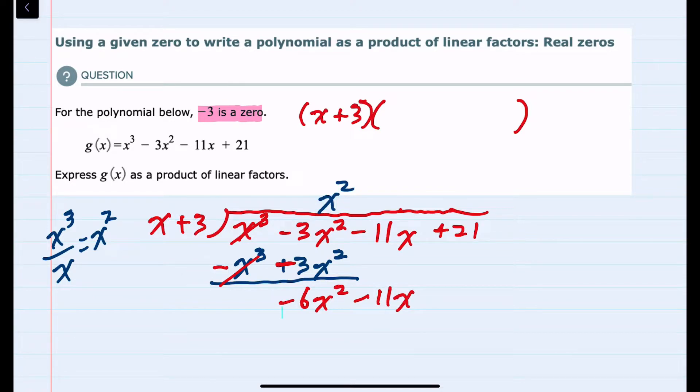And again, I look at the leading terms. This time, negative 6x² is divided by the x on the outside, leaving me a negative 6x. So my next term is a negative 6x. I again multiply negative 6x times x, negative 6x², negative 6x times 3, a negative 18x.